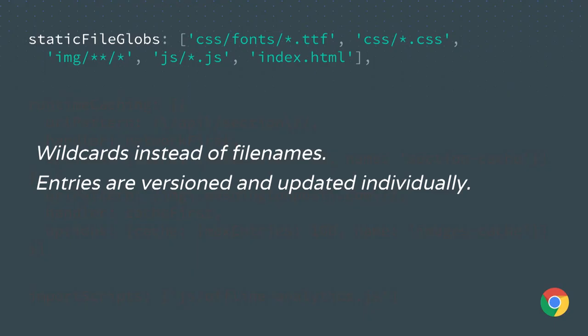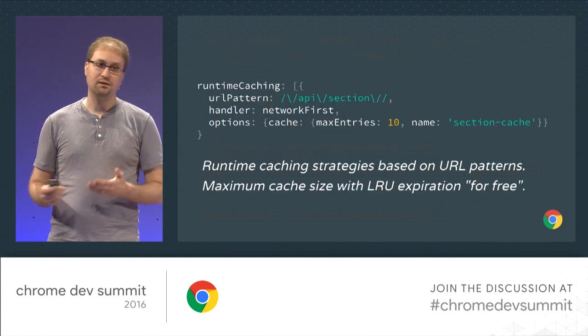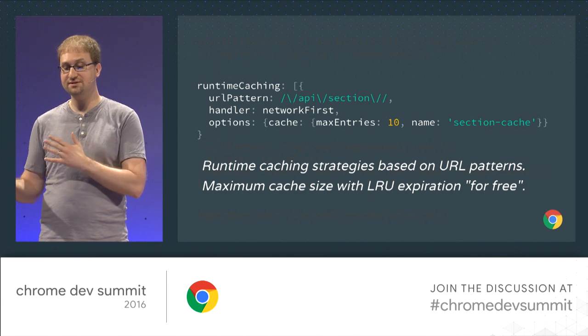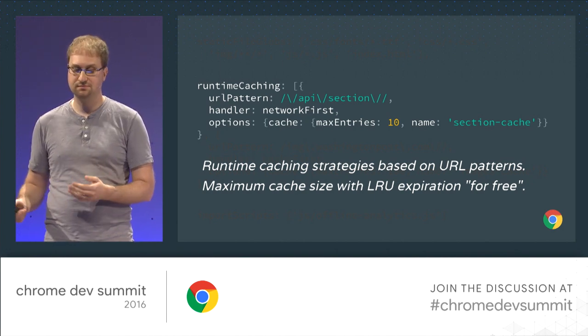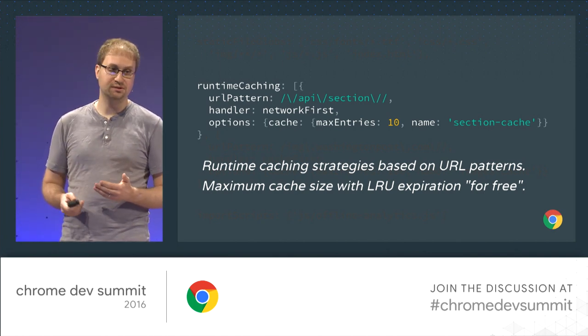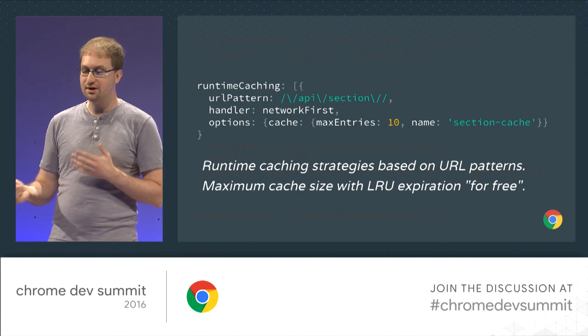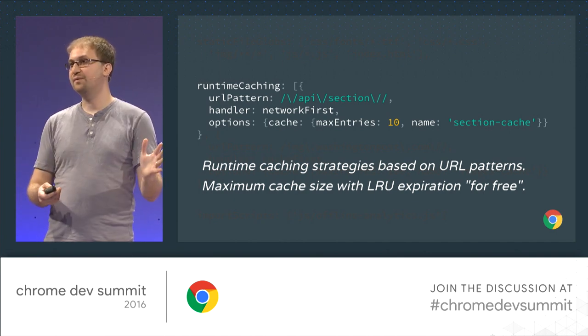Passing this configuration in during the build process is all it takes to generate the service worker deployed to actual production. Let's dig into the specific settings. First, they're using the staticFileGlobs option to define a list of patterns matching files in their build directory — this is the alternative to hard-coding a list of URLs. Anything matching these patterns is automatically pre-cached, and cache entries are automatically versioned and kept up to date. Next comes their runtime caching configuration, which uses both swprecache and swtoolbox together — it tells swprecache to automatically include swtoolbox in the generated service worker and configure it based on the provided settings. They define a URL pattern matching their content API and apply a network-first strategy, and also define cache expiration so old entries are expired from the cache rather than building up over time.